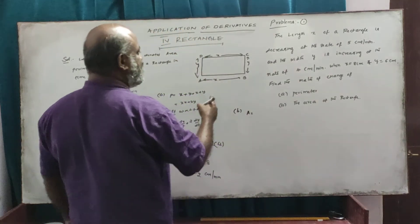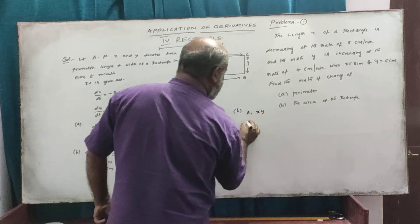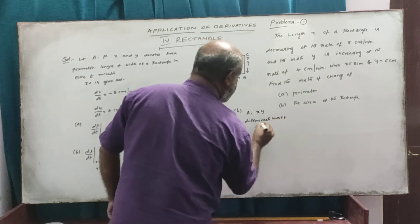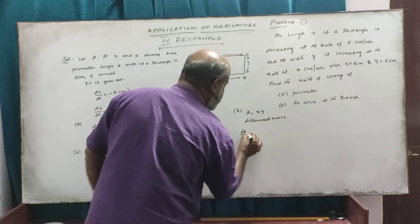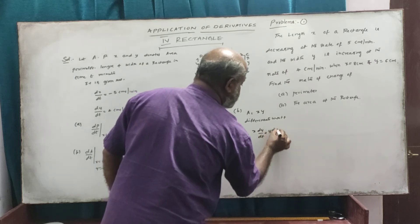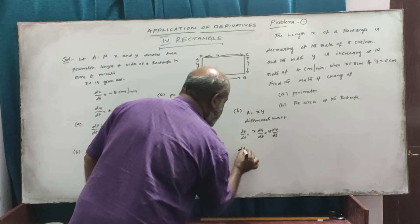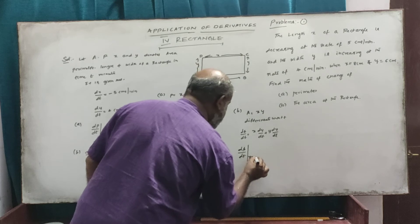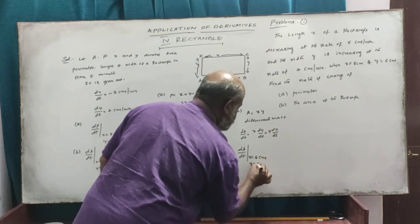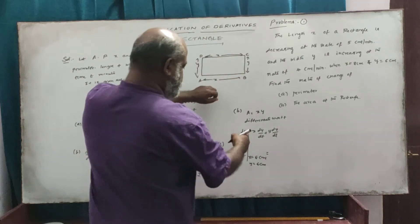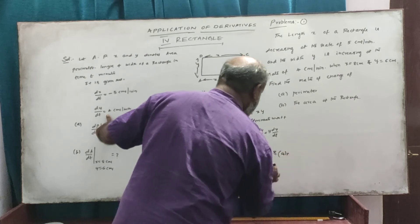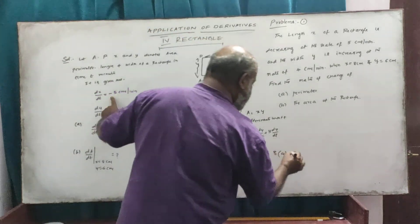For part B, the area of the rectangle is length into breadth, so A equals x into y. Differentiating with respect to t, dA by dt is equal to x into dy by dt plus y into dx by dt. When x equals 8 centimetres and y equals 6 centimetres, dA by dt equals 8 into 4 plus 6 into minus 5, which equals 32 minus 30 equals 2 square centimetres per minute.